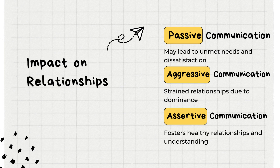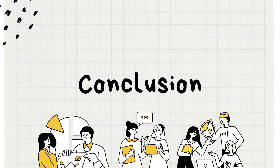Impact on Relationships — Passive Communication: passive communication may lead to unmet needs and dissatisfaction in relationships, as individuals may struggle to express themselves and have their needs acknowledged. Aggressive Communication: strained relationships are a common outcome of aggressive communication. The dominance and disregard for others' feelings can create a toxic environment, eroding trust and understanding. Assertive Communication: assertive communication fosters healthy relationships and understanding. By respecting the rights and feelings of all parties involved, assertive communicators contribute to positive and mutually beneficial connections.